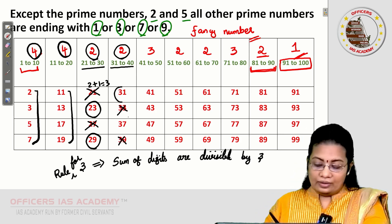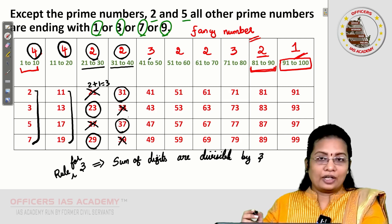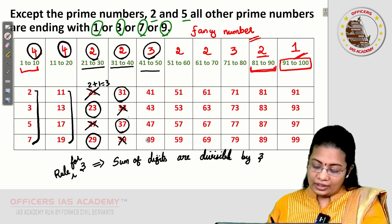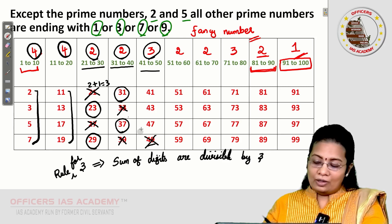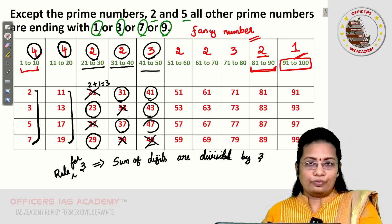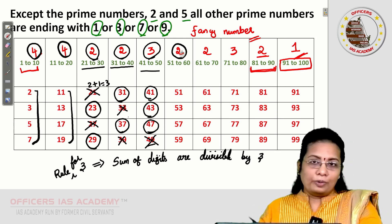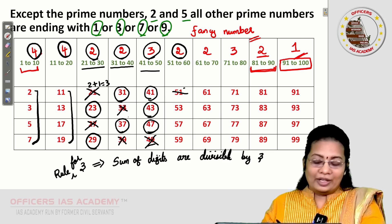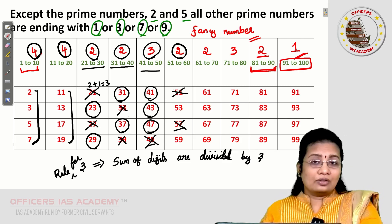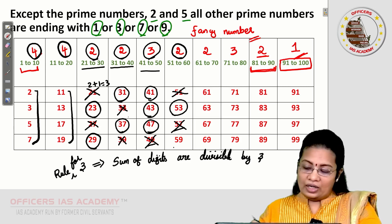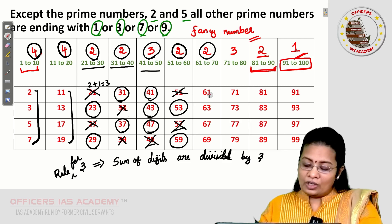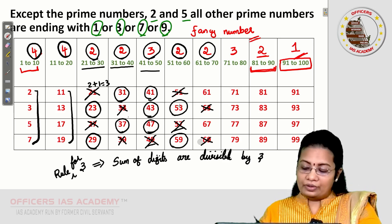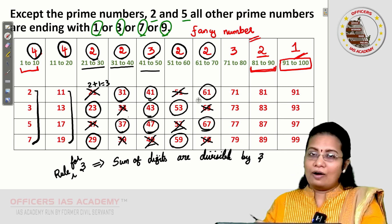From 51 to 60: 2 prime numbers needed. Remove 51 (5+1=6, divisible by 3) and 57 (5+7=12, divisible by 3), leaving 2 primes. From 61 to 70: remove 63 (6+3=9) and 69 (6+9=15), both divisible by 3, leaving primes 61 and 67.